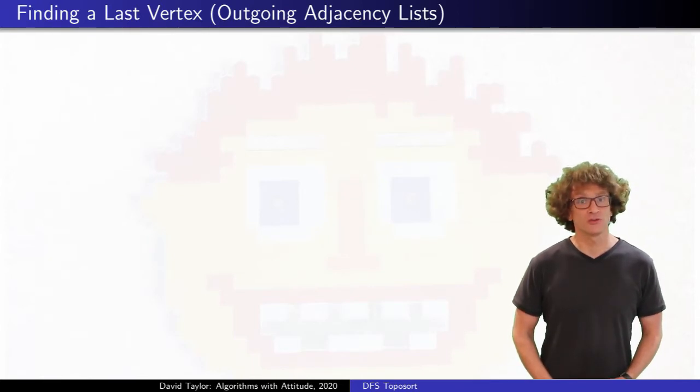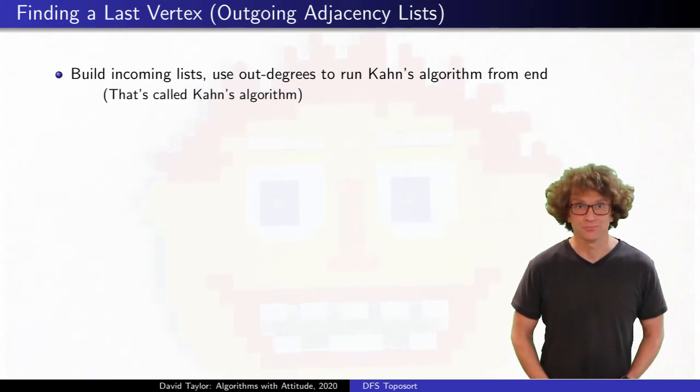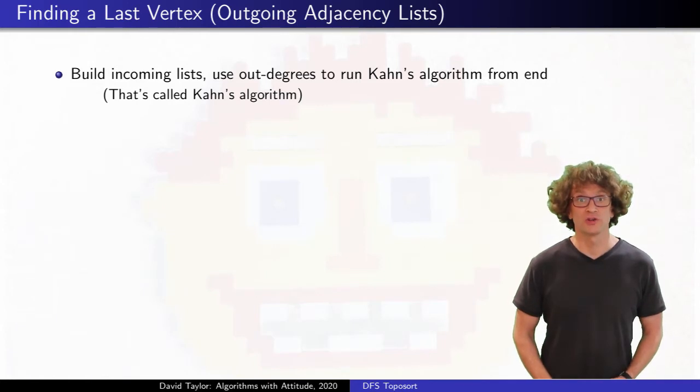Of course, we could also try to find something that goes last, and work our way toward the first item. To do that, we could modify Kahn's algorithm to work from the back, but I'd call that Kahn's algorithm. It might be slightly slower than before, because it first converts the graph into the incoming edge adjacency list representation. That incoming versus outgoing adjacency list is the only non-symmetrical difference between finding the ordering front to back, or back to front.